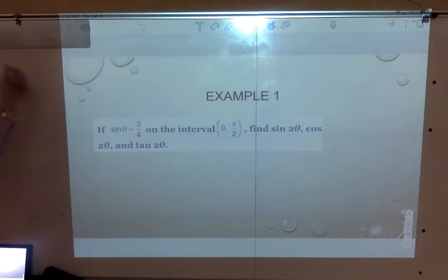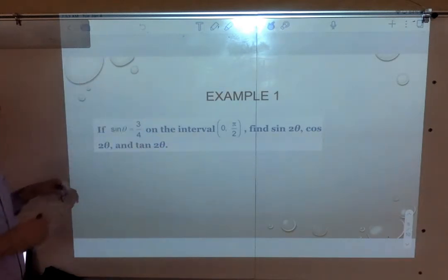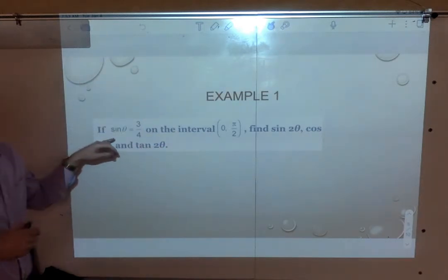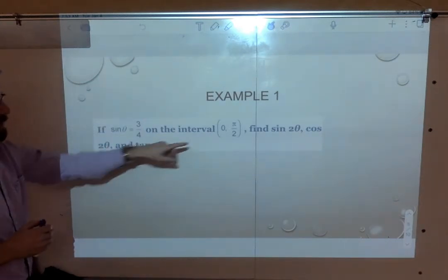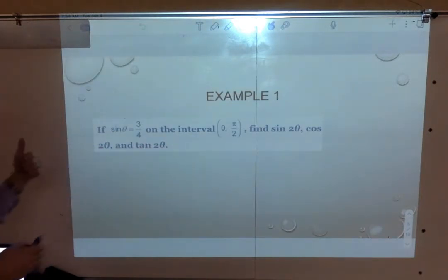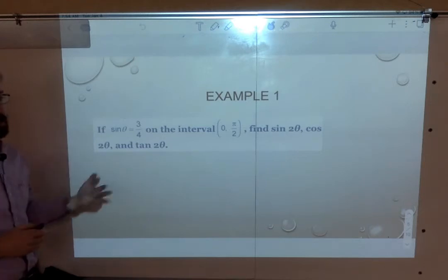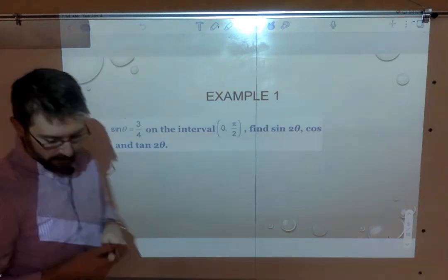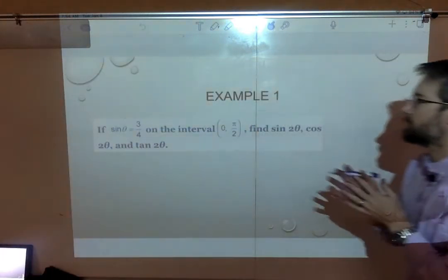First problem: sine of theta is three-fourths on this interval. We want to find sine of two times theta, cosine of two times theta, and tangent of two times theta.